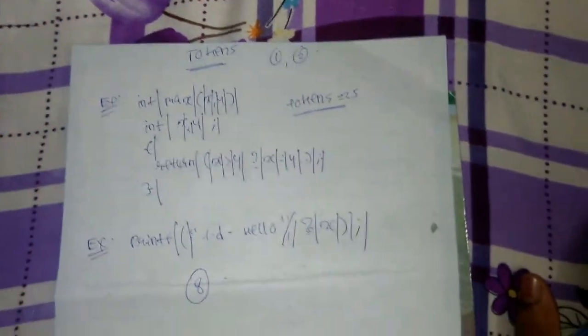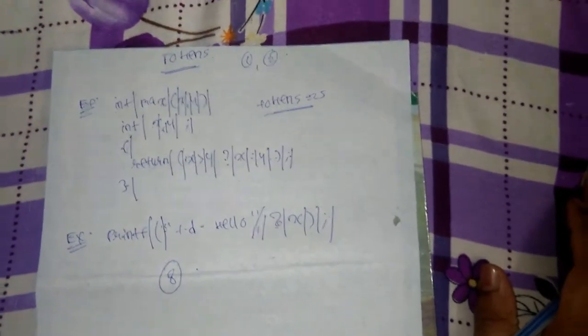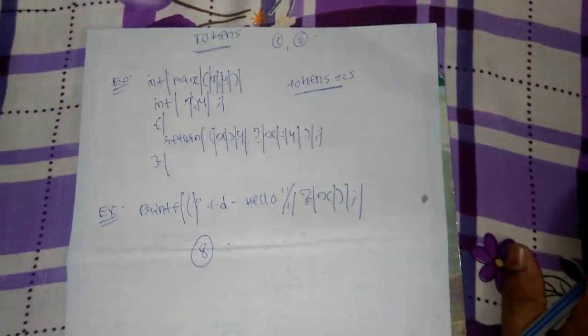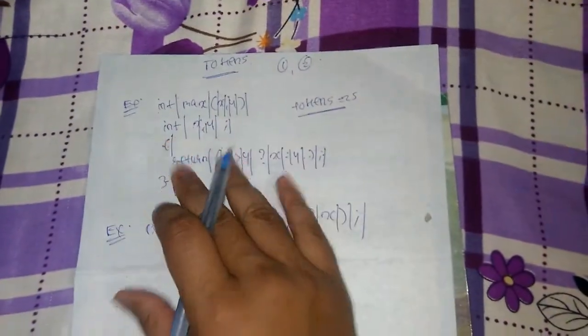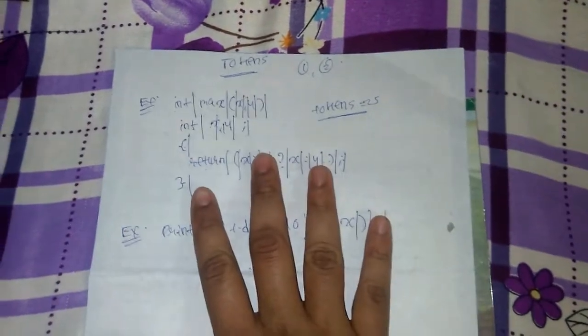So this is all about tokens. This is a very important type of question. It is not generally asked in theory-type questions, but in competitive papers, especially in GATE, it is a famous question. A one or two mark question will be asked: you will be given any number of lines and you will be asked how many tokens are present.